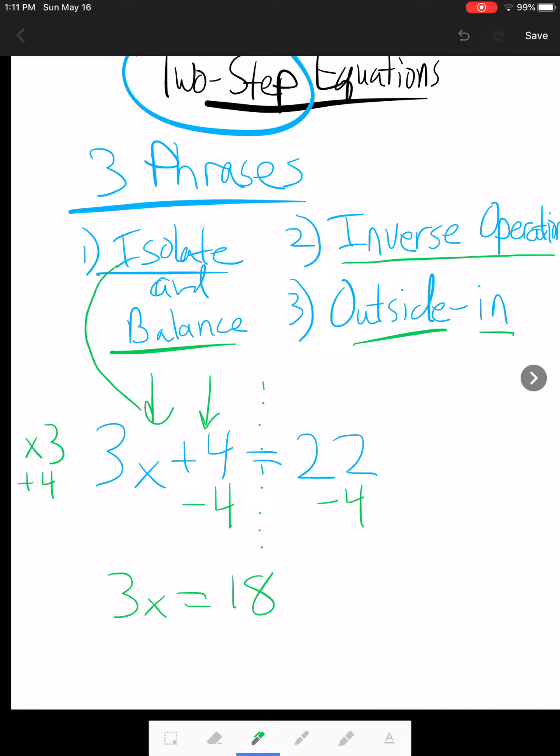Then we end up getting 3x is equal to 22 minus 4 is 18. Now we repeat this process. We have to do the inverse operation. We are currently multiplying our x by 3. So now we will divide both sides by 3. Cross those out. Mirror line. Simplify that. You get 6. And so our final answer here is x equals 6. We box it. We walk away.